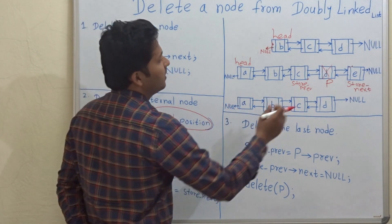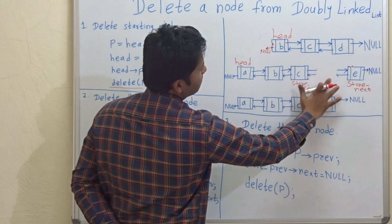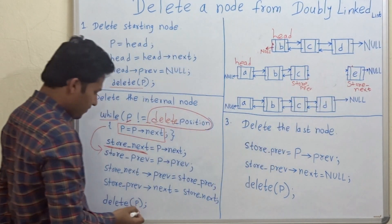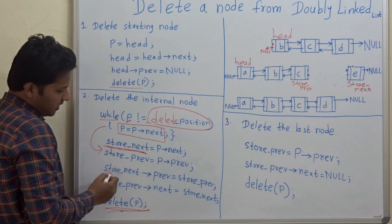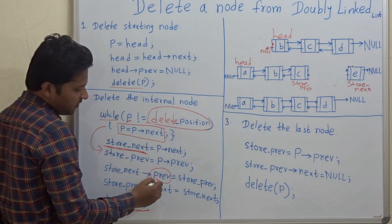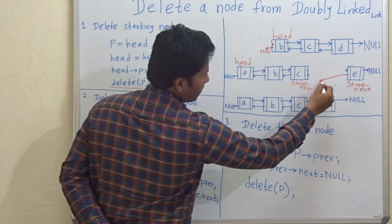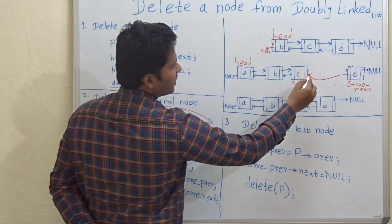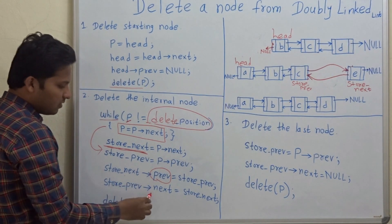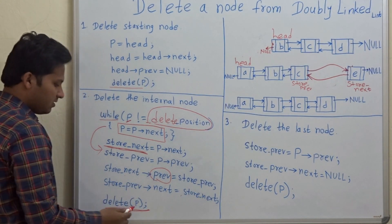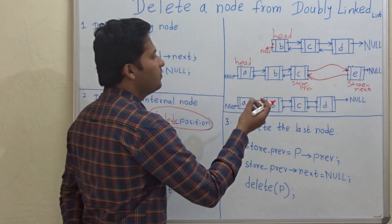Now store_next->previous equals store_previous. We are free to delete this node. We have deleted the node, and the previous pointer of store_next should point to store_previous, while the next pointer of store_previous should point to store_next. We have already deleted p. This is how we delete a node which is in the middle.